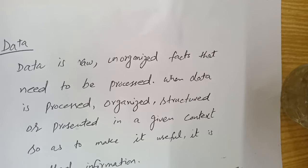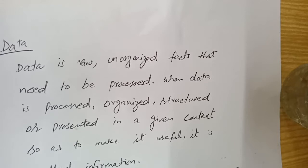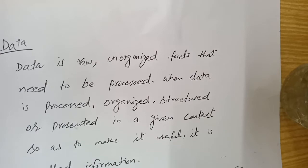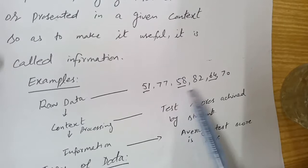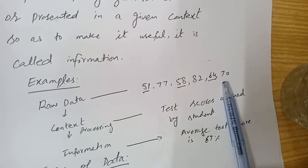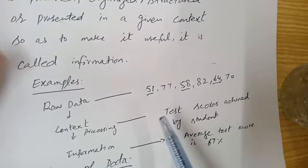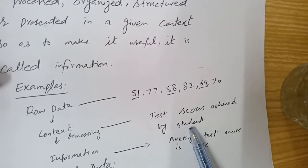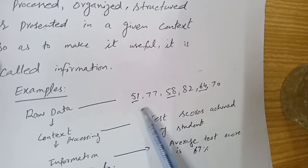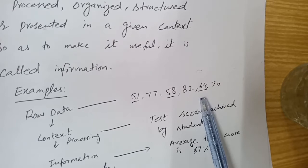Data is something which is raw material — unorganized facts — that we process to make useful information. Let's see an example of data. We have some numbers: 51, 77, 58, 82, 64, and 70. We are not sure about the meaning of these numbers, but then we process this raw data and find that these are the test scores achieved by students.